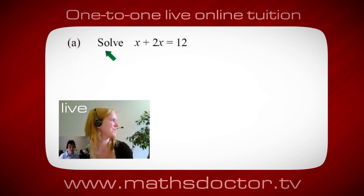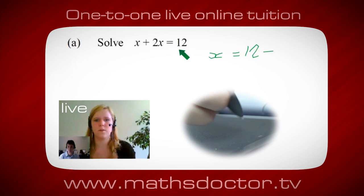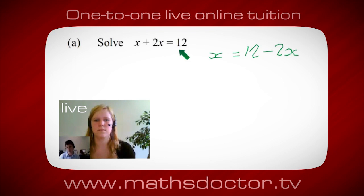Okay, so let's have a look at this one. Solve x plus 2x equals 12. So what do you think you do first? Okay, well I want x on its own, so I would put x equals 12 minus 2x.